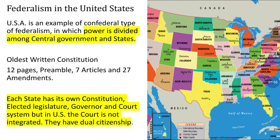Each state has its own different legislative assembly procedures. Every state is different in the USA. Secondly, they have their own courts.